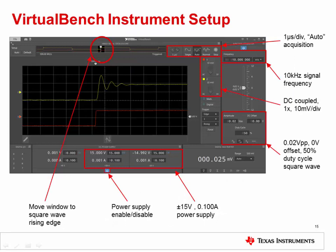Next, apply power to the National Instruments VirtualBench and connect it to your computer with a USB cable. The hardware should be detected as a virtual CD drive, and you can run the VirtualBench software directly from the drive. Once the software opens, configure the software as follows: set the time scale to 1 microsecond per division with the acquisition mode set to auto. Enable channels 1 and 2 on the oscilloscope and set them to 1x, DC coupled mode, 10 millivolts per division. Enable the function generator and set up the signal as follows: 10 kilohertz frequency, 20 millivolts peak to peak, 0 volts offset, 50% duty cycle square wave. Set the plus 25 volt power supply to plus 15 volts, 0.1 amps. Set the minus 25 volt power supply to minus 15 volts, 0.1 amps.